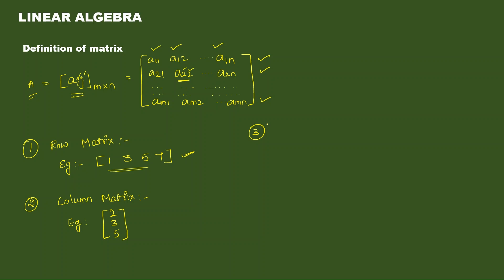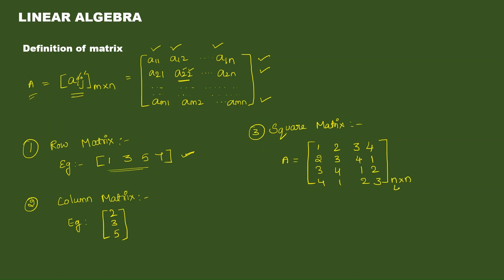Next — square matrix. A matrix having n rows and n columns is called a square matrix of order n. An m cross n matrix for which m equals n is called a square matrix — meaning, number of rows equals number of columns. Example: a 4 cross 4 matrix.